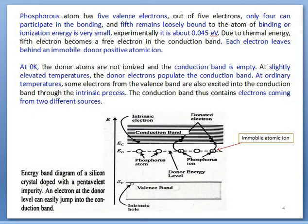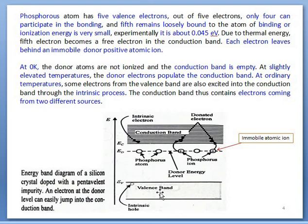By following a similar process, when all the donor atoms have released electrons to the conduction band, and by further increasing temperature — due to unavailability of electrons from the donor level — the covalent bonds in the valence band start to break, and electrons from this band start to jump to the conduction band. This process is known as intrinsic transition. Then holes are produced in the valence band. This kind of process occurs in N-type semiconductor.